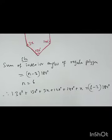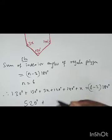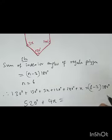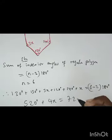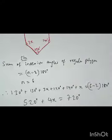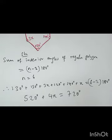So we have 520 degrees plus 3x and x, which gives 4x equals 6 minus 2 which is 4. 4 times 180 gives 720 degrees.